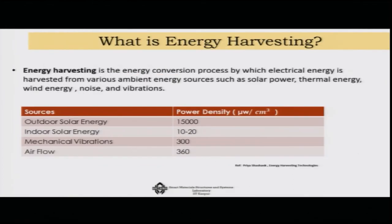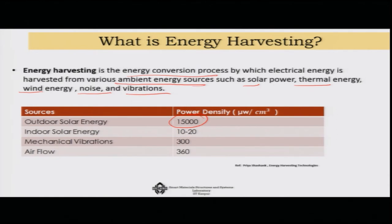Energy harvesting systems involve an energy conversion process by which electrical energy can be harvested from various ambient energy sources. Ambient energy could be solar, thermal, wind, noise, or vibration. Solar energy outdoors has a power density of about 15,000 microwatts per cm³ — very high — but it is not available all day and night, and indoors it drops to only 10 to 20. Mechanical vibrations on the other hand offer about 300 microwatts per cm³, and air flow about 360 microwatts per cm³.